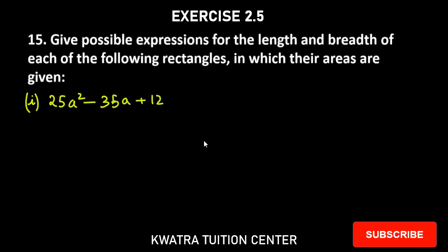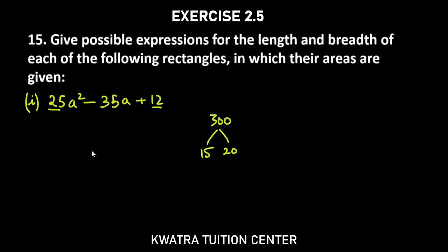We will get length and breadth from factorization. First we have 25 and 12. 25 into 12 is 300. 300 needs to be split so that we get 35a. So 35 will come as 15 into 20.